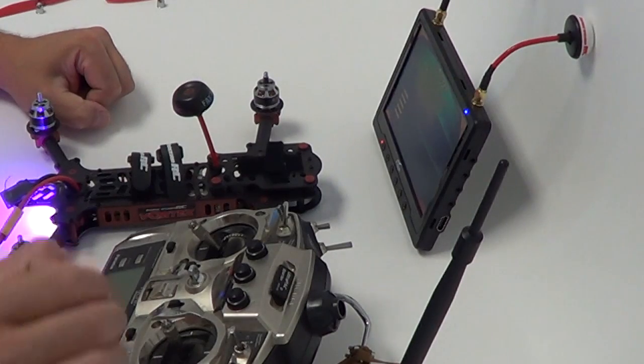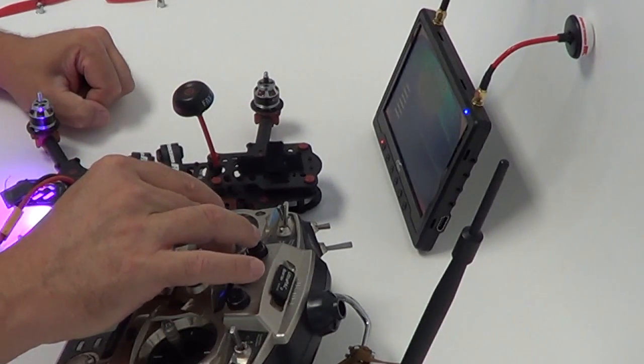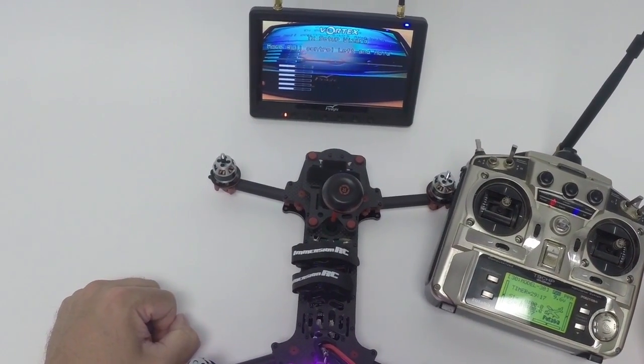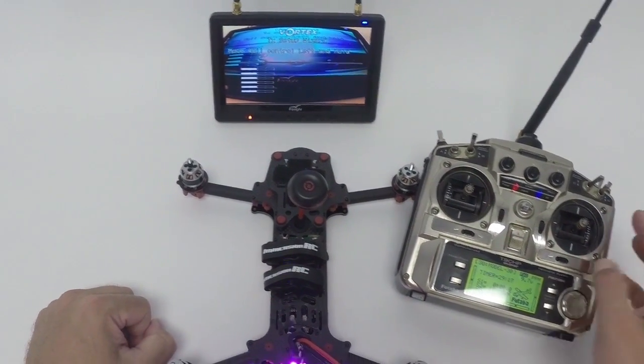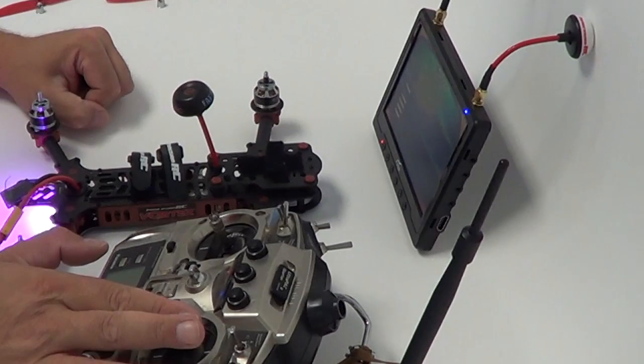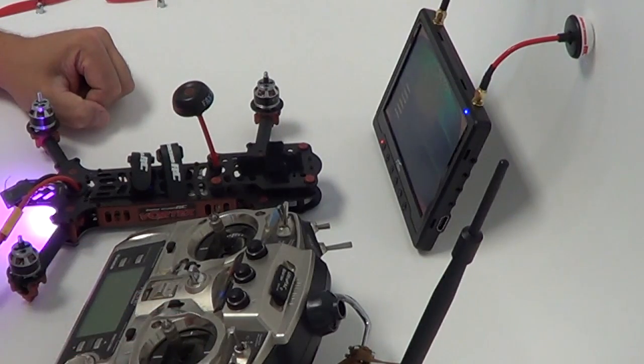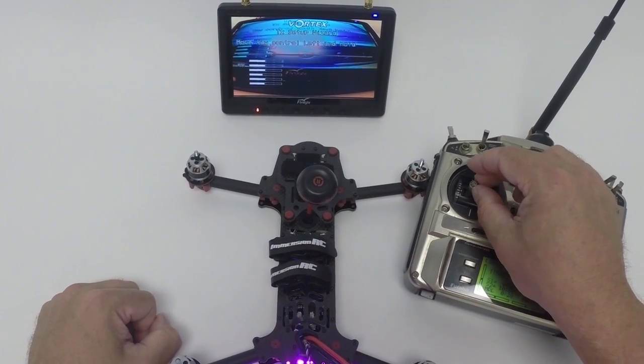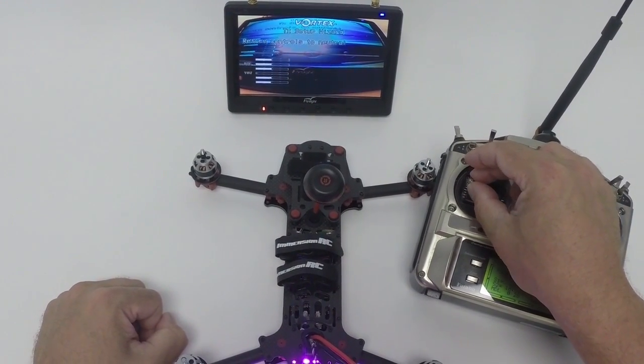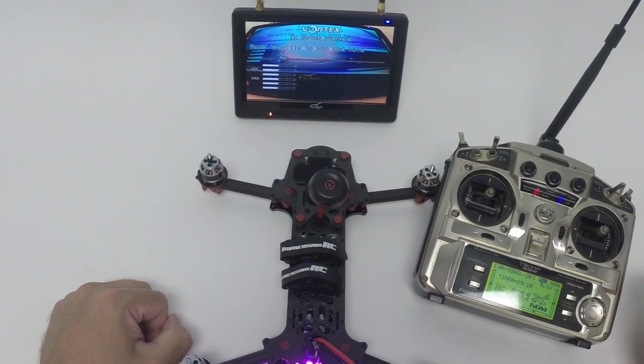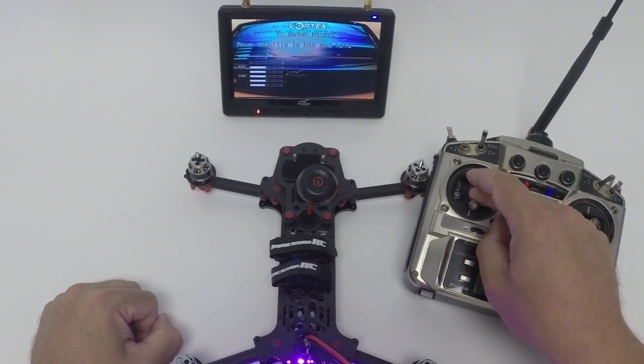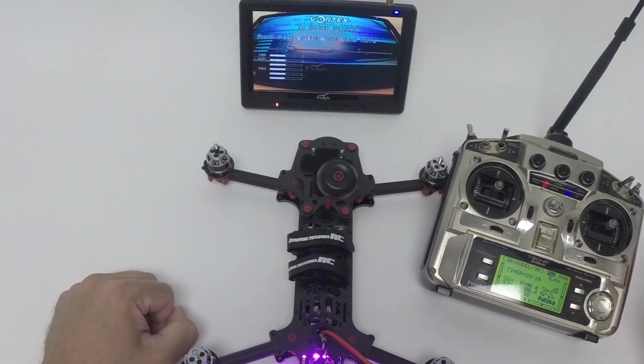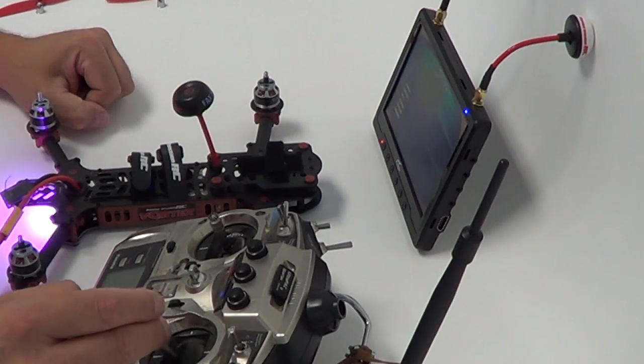The Vortex is asking us to center and hold our control so we are going to raise the throttle to the middle. Now it's asking us to move the roll control to the left and hold. We put it back in the middle. Now it's asking us to move the yaw control to the left and hold. Throttle to the minimum and hold. Go back to the middle. Pitch stick back and hold.